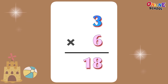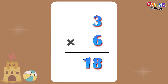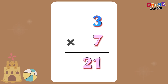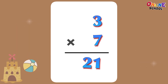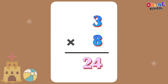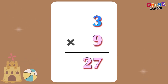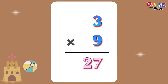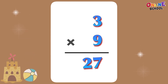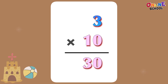3 times 6 equals 18. 3 times 7 equals 21. 3 times 8 equals 24. 3 times 9 equals 27. 3 times 10 equals 30.